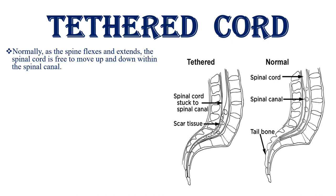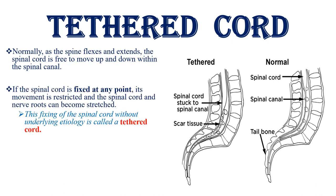Normally, as the spine flexes and extends, the spinal cord is free to move up and down within the spinal canal. If the spinal cord is fixed at any point, this movement is restricted and the spinal cord and nerve roots become stretched. This fixing of the spinal cord without an underlying etiology is called a tethered cord.